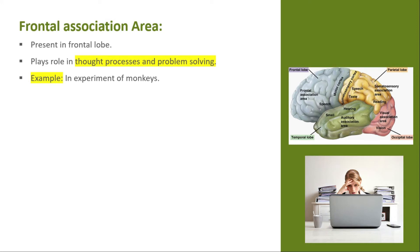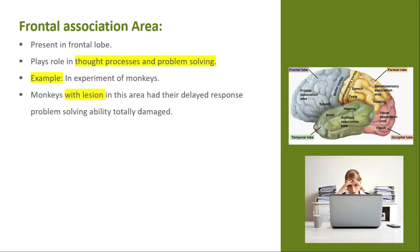In the experiment, two identical cups were used — one had food and the other did not. Then an opaque screen was placed in front of the cups for 5 to 60 seconds. After the screen was removed, the monkey with frontal lobe damage could not remember which cup contained the food, whereas normal monkeys could remember for several minutes which cup had the food. This deficit is called the delayed response deficit and is specific to frontal cortex damage.